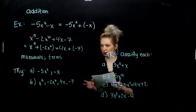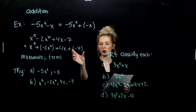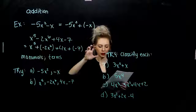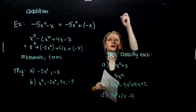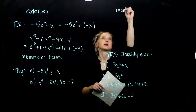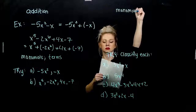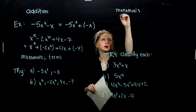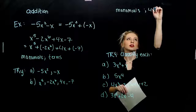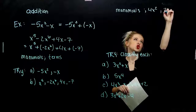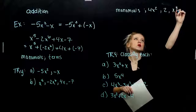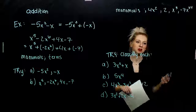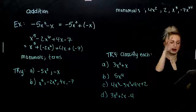Individually, we want to be able to classify these things. We know what monomials look like when it's one term, one chunk. Monomials are the polynomials with just one term. A few examples: 4x squared, 2x cubed, negative 7x to the 64th. Doesn't matter — they're all monomials.